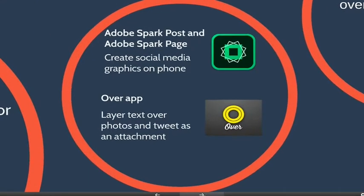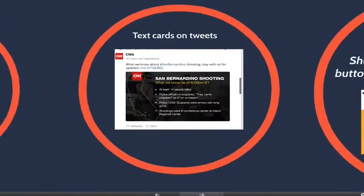A couple other tools helpful for social media images: Adobe Spark Post and the Over app. Over has been around about five or six years — it allows you to take a photo off your phone, tap it, and layer text over it: a quote, a statistic, with different font selections and colors. Adobe Spark Post does the same. Adobe Spark Page is a little different — it's both an app and a desktop version — it lets you do vertical slideshows, like a Tumblr, posting a series of photos with text in between. All three of these tools, as well as Storyline, are very intuitive and easy to use.